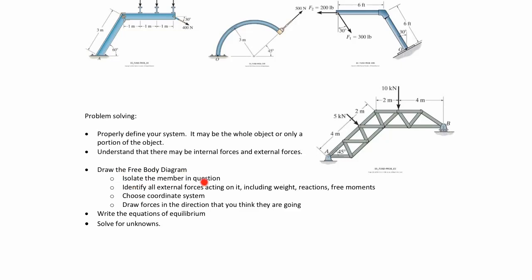To draw the free body diagram: isolate the member in question, identify all external forces acting on it including the weight, the reactions, and any applied moments. Choose a coordinate system — generally X and Y, though sometimes if there's an inclined plane you might define a rotated coordinate system. Draw the forces in the direction you think they are going. Write the equations of equilibrium: sum of forces in X equals zero, sum of forces in Y equals zero, and sum of moments equals zero. Then solve for the unknowns.